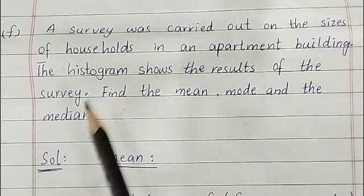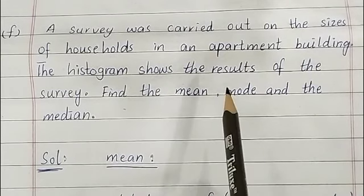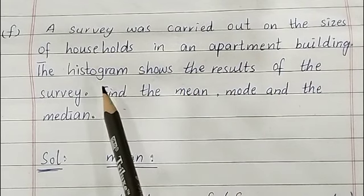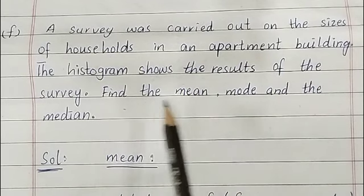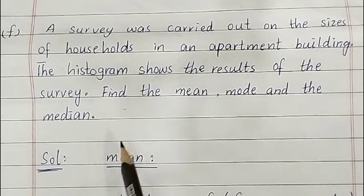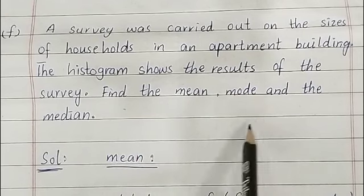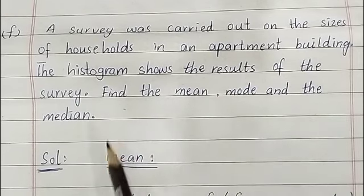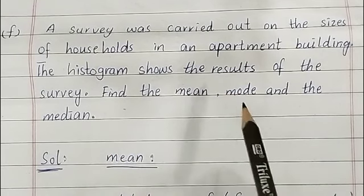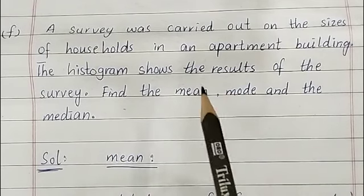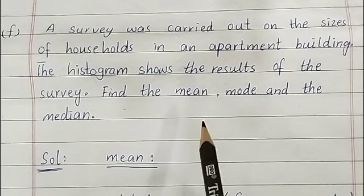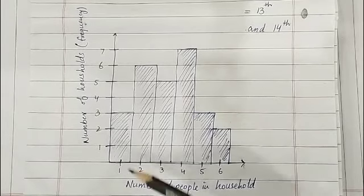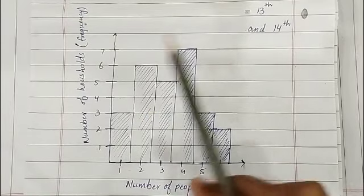They have given a histogram to show the results of the survey. You have to find the mean, mode, and median — all three types of averages. First I am going to explain the histogram to you, and then one by one we are going to find out mode, mean, and median.